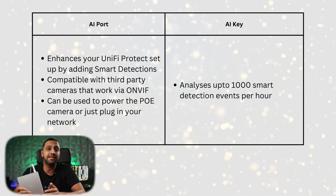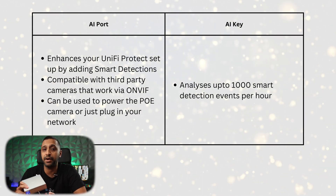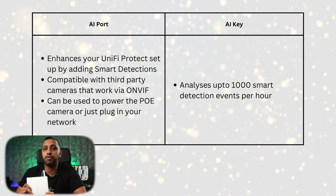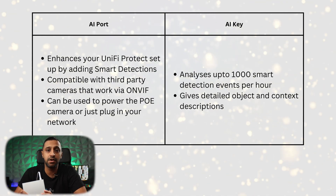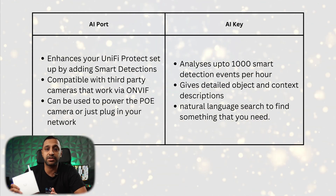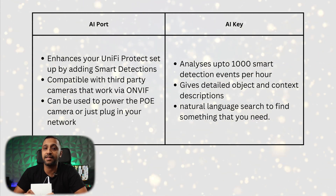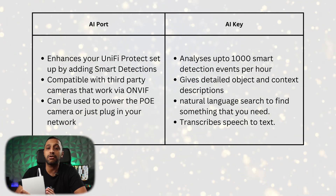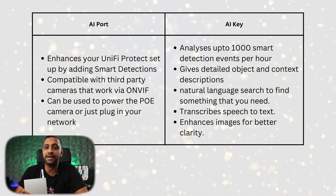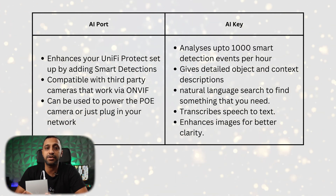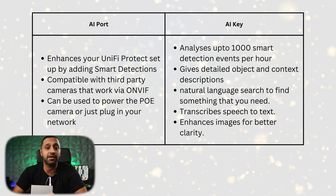Now the AI Key — this is an edge AI appliance which gives you the following features: it analyzes up to 1,000 smart detection events per hour, provides detailed object and context descriptions, gives you the ability to use natural language search to find anything you're looking for, transcribes speech events with AI cameras, and sharpens face recognition images for enhanced identification.